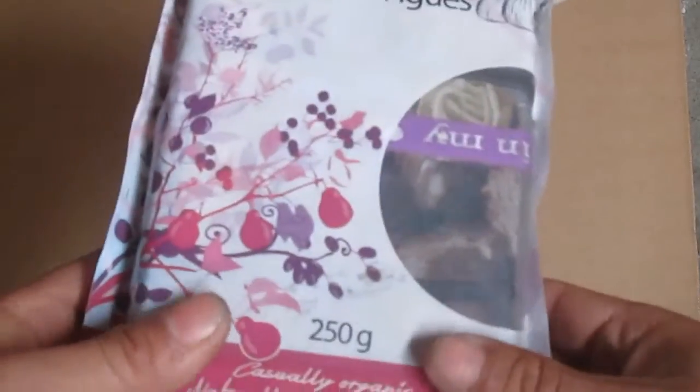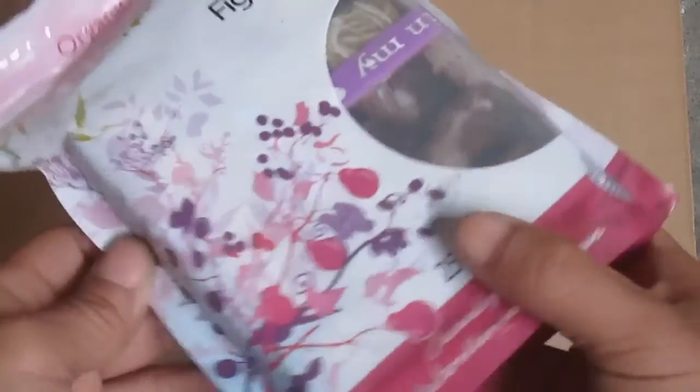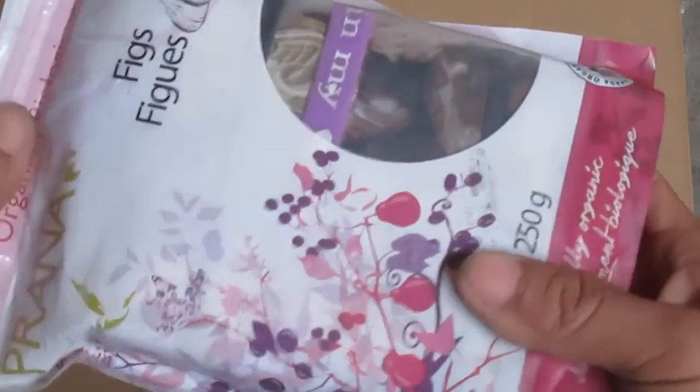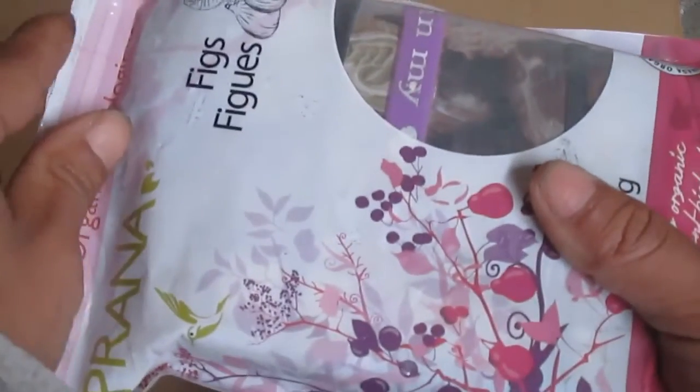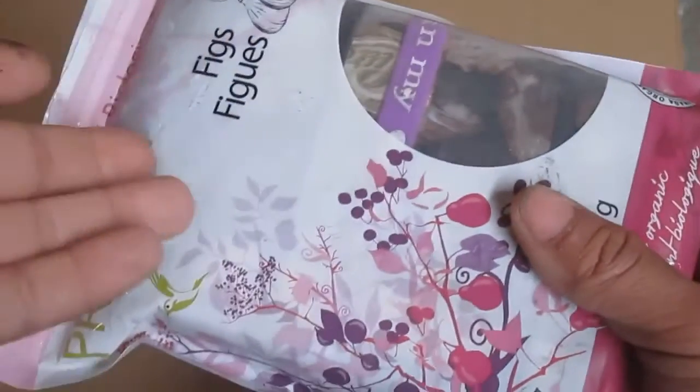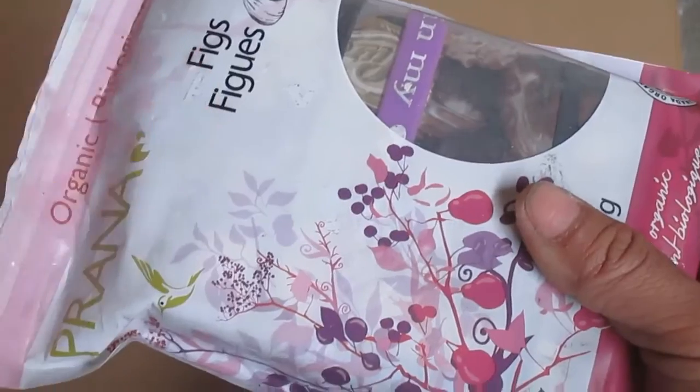As you can see, it's in a baggie, one of those resealable type of baggies. Something like beef jerky or frozen food or maybe some figs. Something like this will work quite well. So let's open it up.